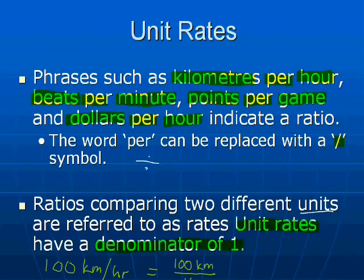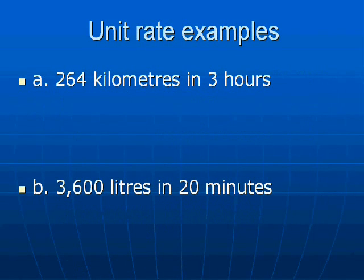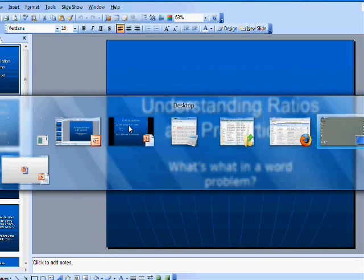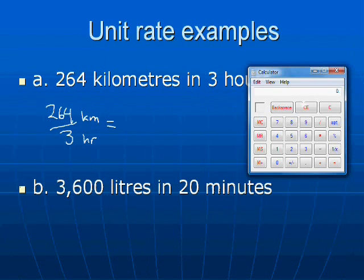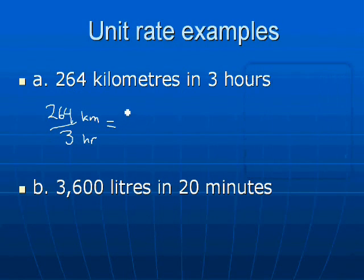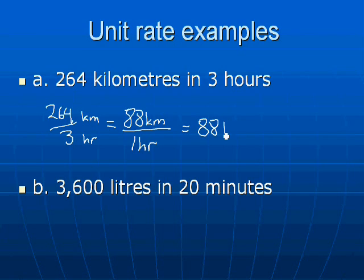So let's do a couple of examples of unit rate. If I had 264 kilometers in three hours, that would be 264 kilometers divided by three hours. Let me bring up our calculator. 264 divided by three equals 88. So that would give us 88 kilometers over one hour, which would be 88 kilometers per hour.